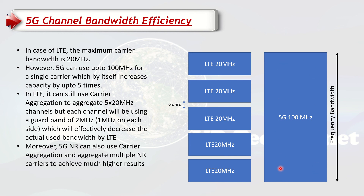Moreover, 5G also supports carrier aggregation. For example, 2CC with 100 megahertz channels brings it up to 200 megahertz. Moving to higher frequency bands like 28 gigahertz or n257, you can have 400 or even 800 megahertz of bandwidth available, making the capacity much much higher.